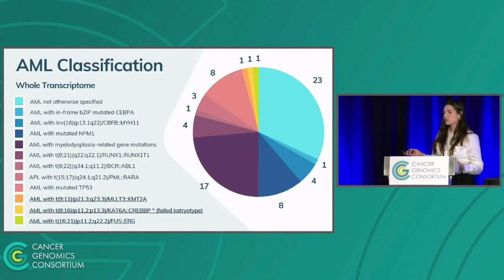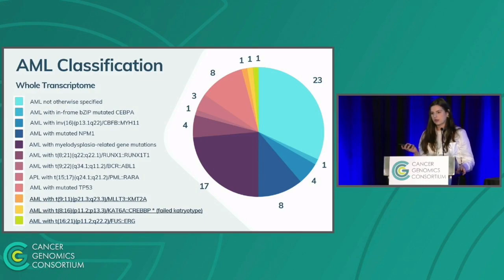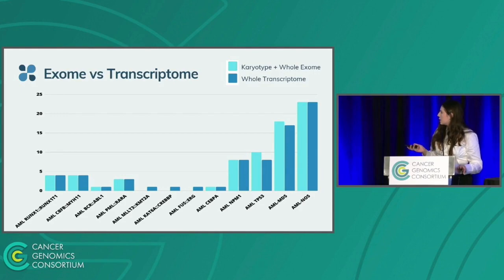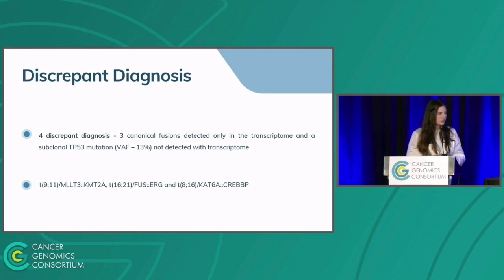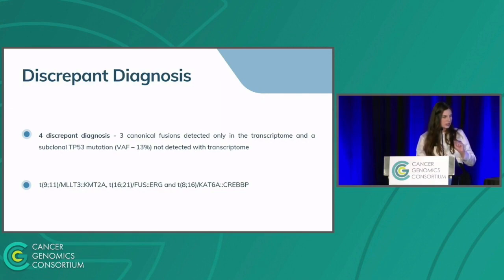Three fusions were detected only by transcriptome and not by karyotype. One case had a failed karyotype because it was shipped from another site, resulting in poor sample quality and absence of metaphases. When comparing exome plus karyotype with transcriptome, we see similar proportions, but discrepancies exist for AML-TP53 and AML-MDS diagnoses. A subclonal TP53 mutation with variant allele frequency of 30% was not detected by transcriptome.